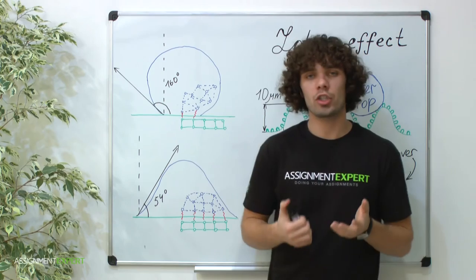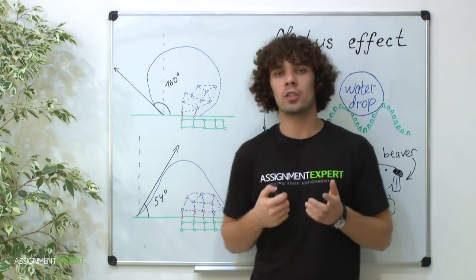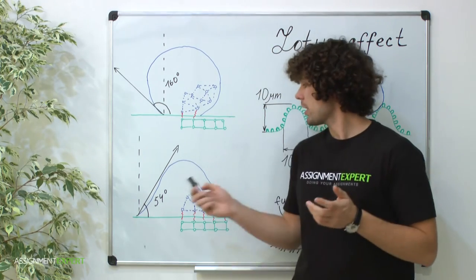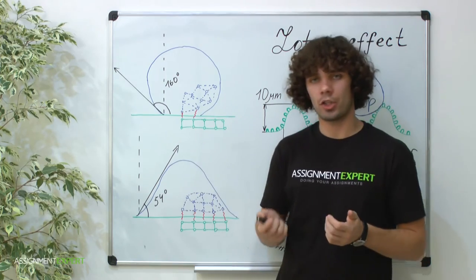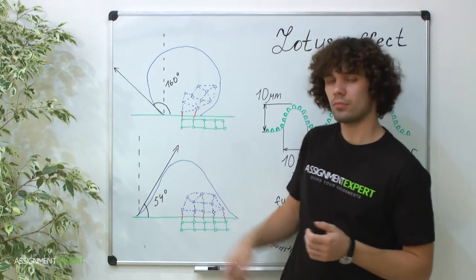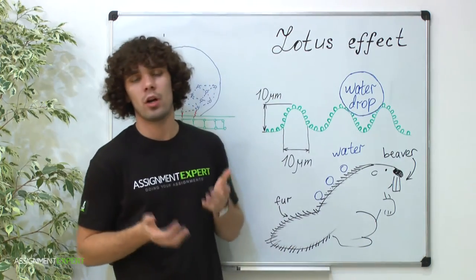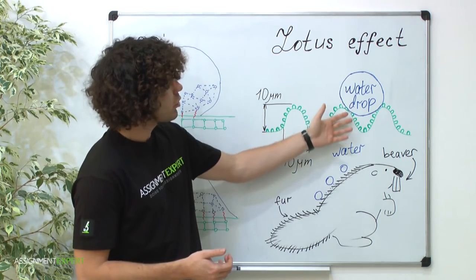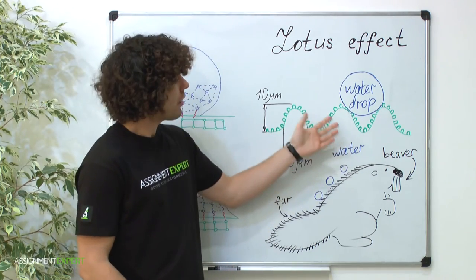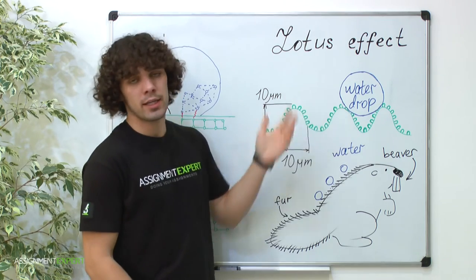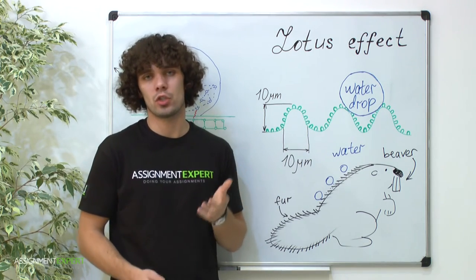It is the structure of the surface that significantly decreases wetting and makes contact angle three times larger. A drop of water on the surface of lotus leaf doesn't penetrate between populate. To get through them, the contact area has to be increased, which is energy consuming.